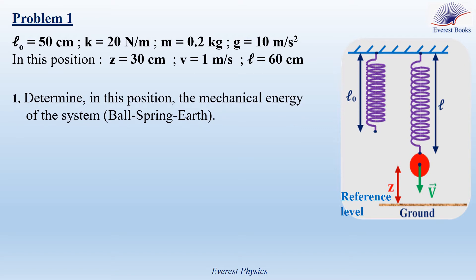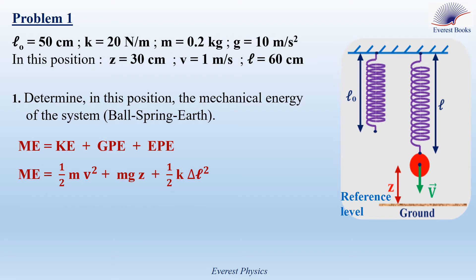The formula of the mechanical energy in this situation is: ME = KE + GPE + EPE. This gives ME = ½Mv² + Mgz + ½k·ΔL². Delta L is the final length L minus the natural or original length L0, as shown in the figure. Now let's go to the numerical application.